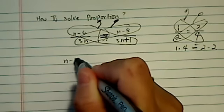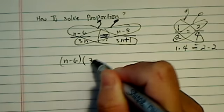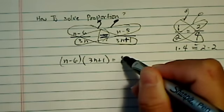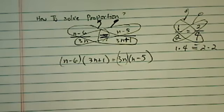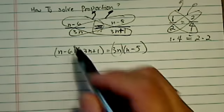So let's do the same thing over here. n minus 6 times 3n plus 1 is equal to 3n times n minus 5. And lo and behold, no more fractions. And from here, it should be pretty easy.